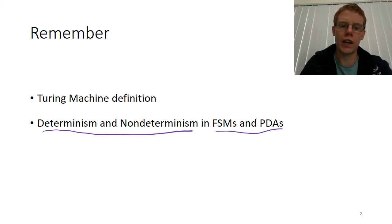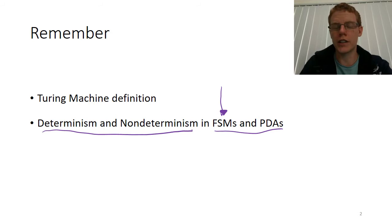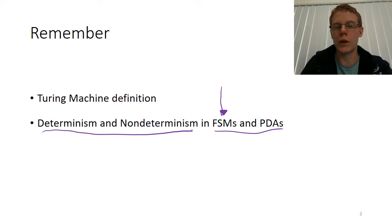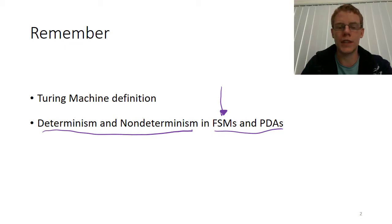Some recap: we talked about non-determinism in finite state machines and found that it added no power. When I'm talking about power, I refer to the ability of a particular model — like a finite state machine — to decide languages. Adding non-determinism didn't let us handle any languages with a finite state machine that we couldn't handle with a deterministic one. We showed this via a proof by construction using the algorithm NDFSM to DFSM.